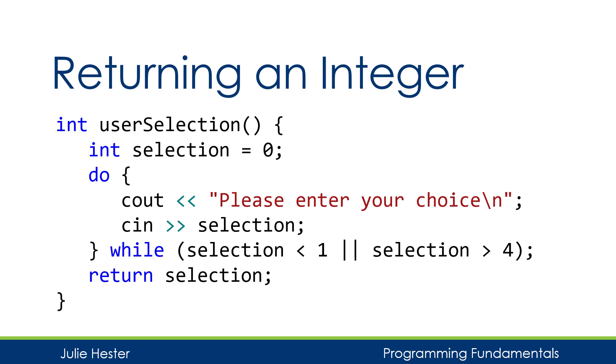So here's an example of a function that returns an integer. The function is named userSelection, and again, it has no parameters. But now instead of void, we have int next to the name userSelection. Inside the function body, we have an integer variable defined. We execute some code, where we set a value to that integer. And then finally, at the end of the function, we're going to return the variable selection, an integer variable.